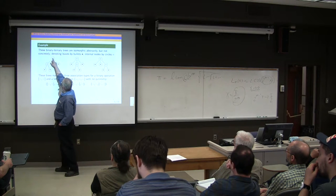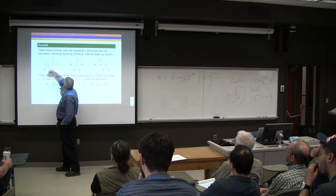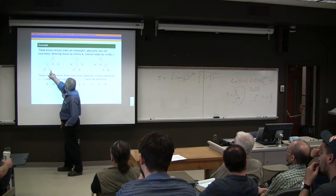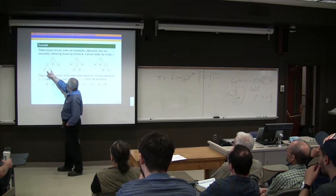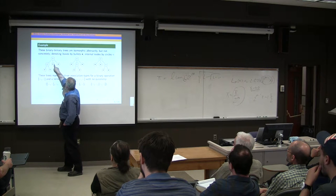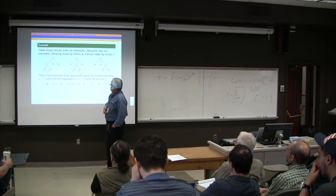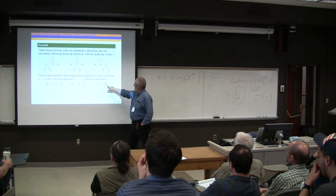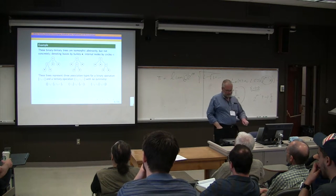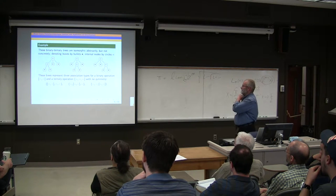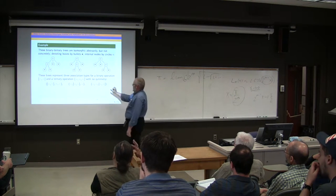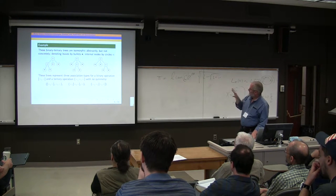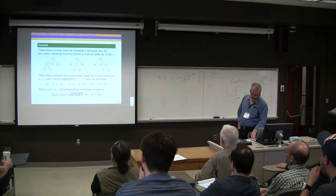What does this represent? So the circle is an internal node representing an operation. The bullet is a leaf representing an argument. So this means you take two arguments, combine them using the binary operation, then you use that as the first argument of a ternary operation with two more arguments. This is very similar except now the binary product is in the middle. This is very similar except the binary product is in the third argument of the ternary operation. So this is assuming these operations have no symmetry.